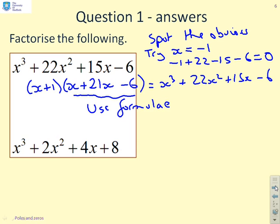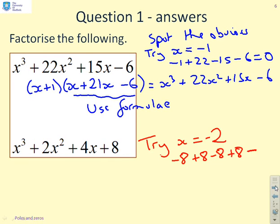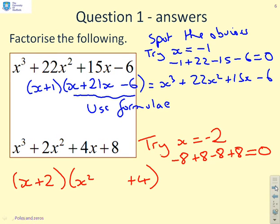What about x cubed plus 2x squared plus 4x plus 8? I'm going to try x equals minus 2 because there seem to be lots of 2s, 4s, and 8s in there. I get minus 8 plus 8 minus 8 plus 8 equals 0, so x equals minus 2 is a root. I can write x plus 2 times x squared plus 4 — the coefficient of x turns out to be 0.